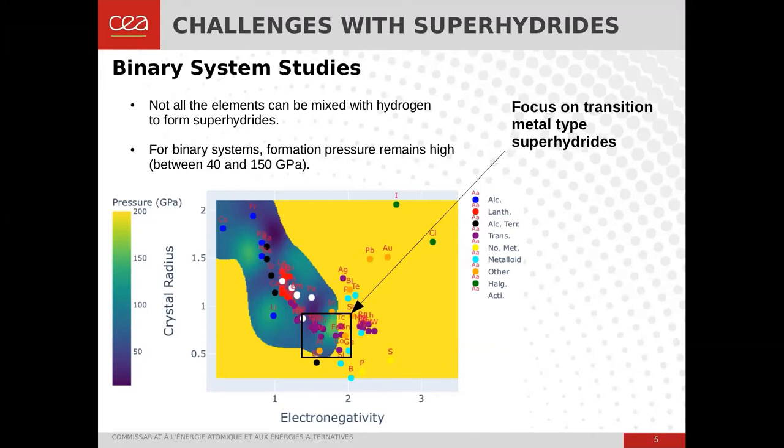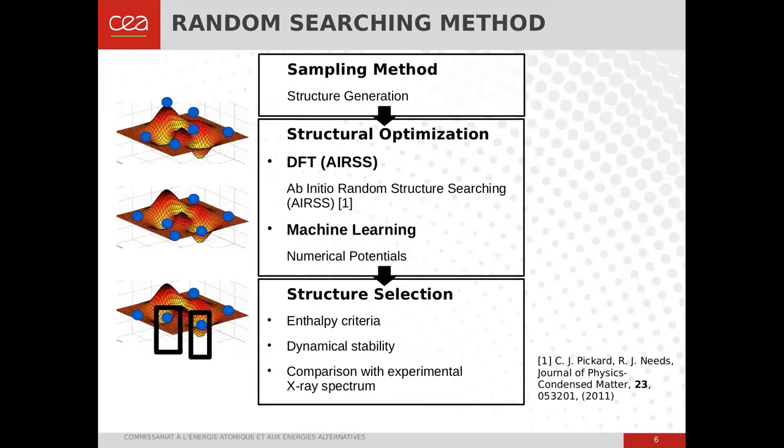It is for this reason that my PhD was focusing on this kind of superhydrides made of transition metal type elements. To predict new superhydrides, we are considering an algorithm called the random structure searching algorithm. In this methodology, the aim is to determine the optimum atomic positions and crystal structure geometry to minimize the system's energy.